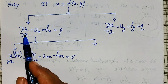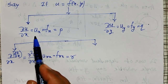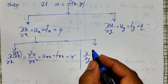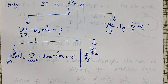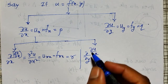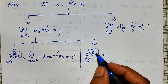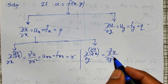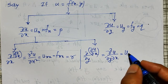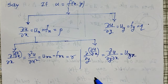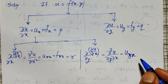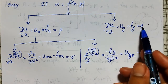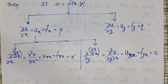Additionally, ∂u/∂x can also be differentiated partially with respect to y. That is ∂/∂y of ∂u/∂x, which is written as ∂²u/∂y∂x — differentiated first with respect to x, then with respect to y. The short notation is u_yx, or f_yx.